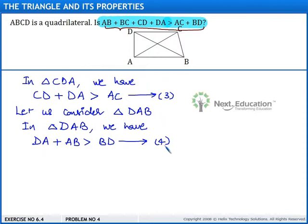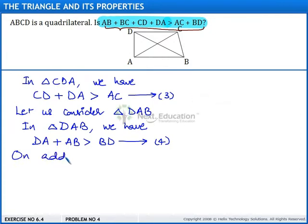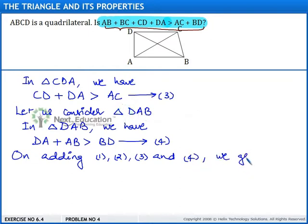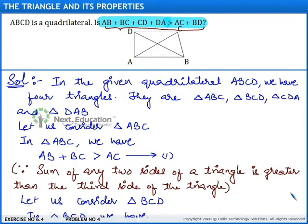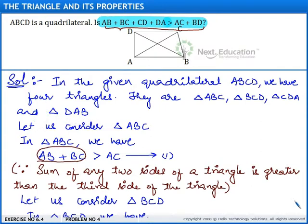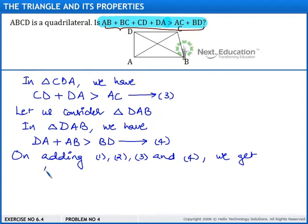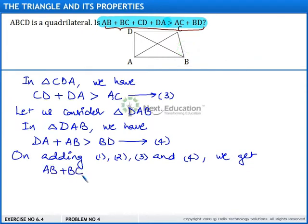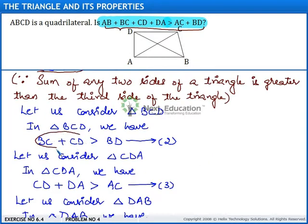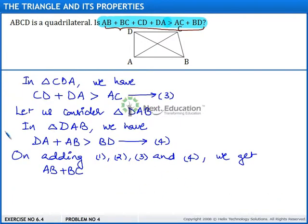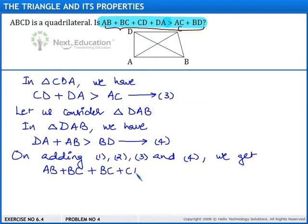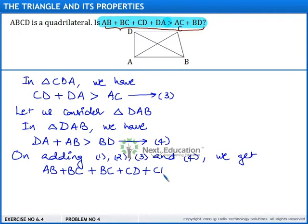Therefore, on adding Results 1, 2, 3, and 4, the left-hand sides give us: AB plus BC (from Result 1), plus BC plus CD (from Result 2), plus CD plus DA (from Result 3), plus DA plus AB (from Result 4).